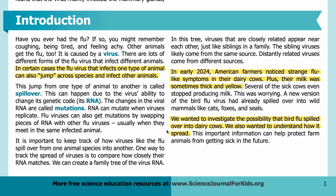It is important to keep track of how viruses like the flu spill over from one animal species into another. One way to track the spread of viruses is to compare how closely their RNA matches. We can create a family tree of the virus RNA. In this tree, viruses that are closely related appear near each other, just like siblings in a family. The sibling viruses likely come from the same source; distantly related viruses come from different sources.